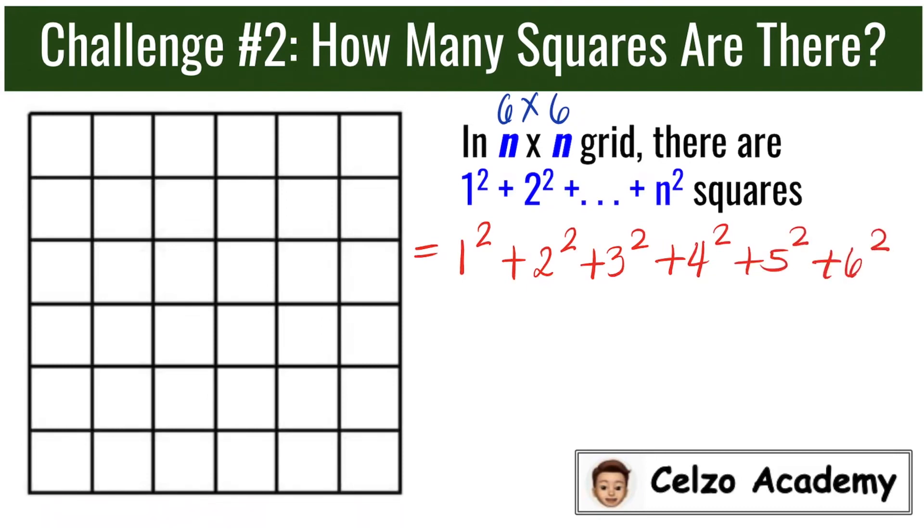Simplifying this, we have 1 + 4 + 9 + 16 + 25 + 36. Adding these numbers together, 1 + 4 is 5. 9 + 16 is 25. 25 + 25 is 50. 50 + 5 is 55. Plus 36 is 91. So this means that this 6 by 6 grid will have 91 distinct squares total.